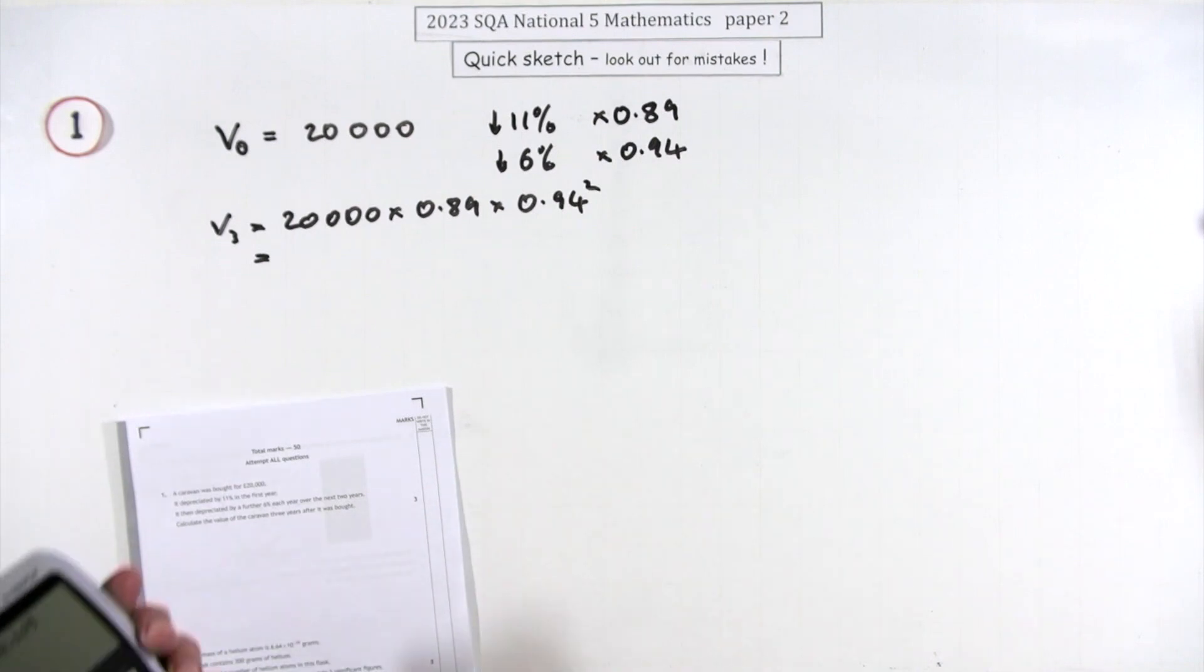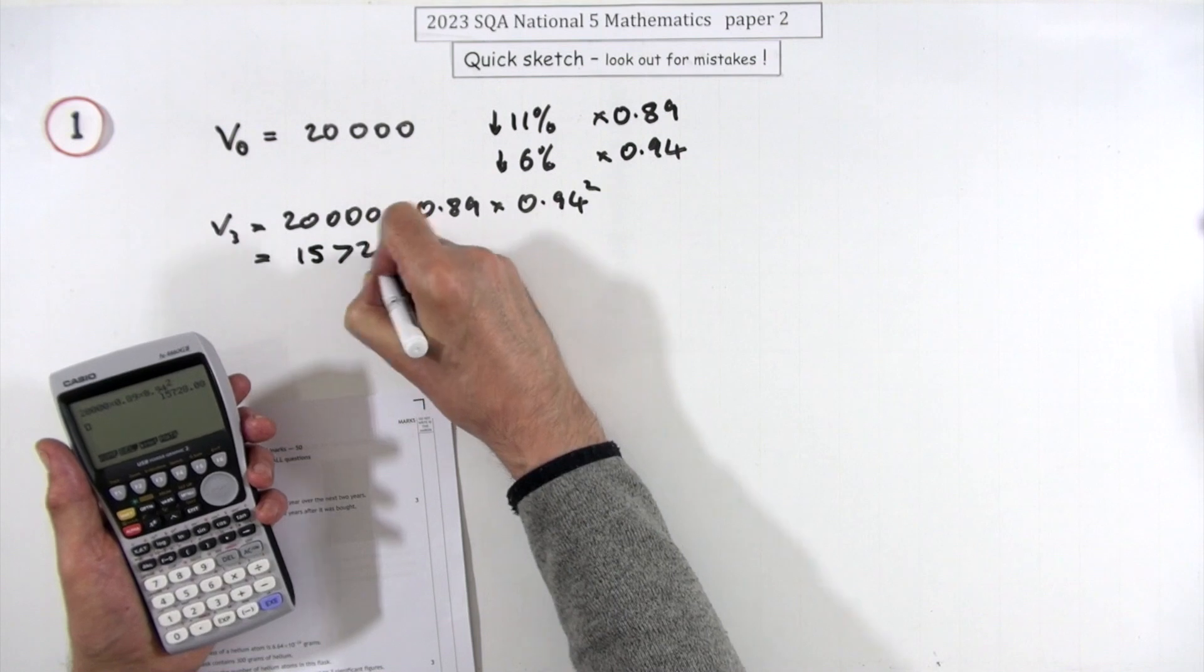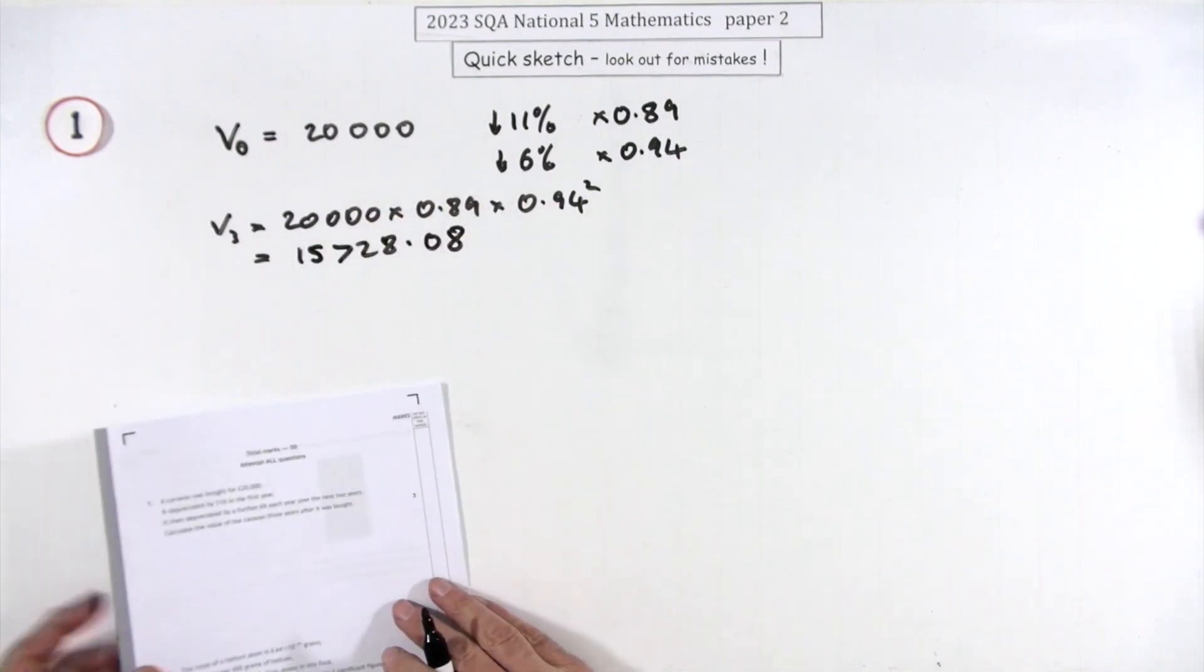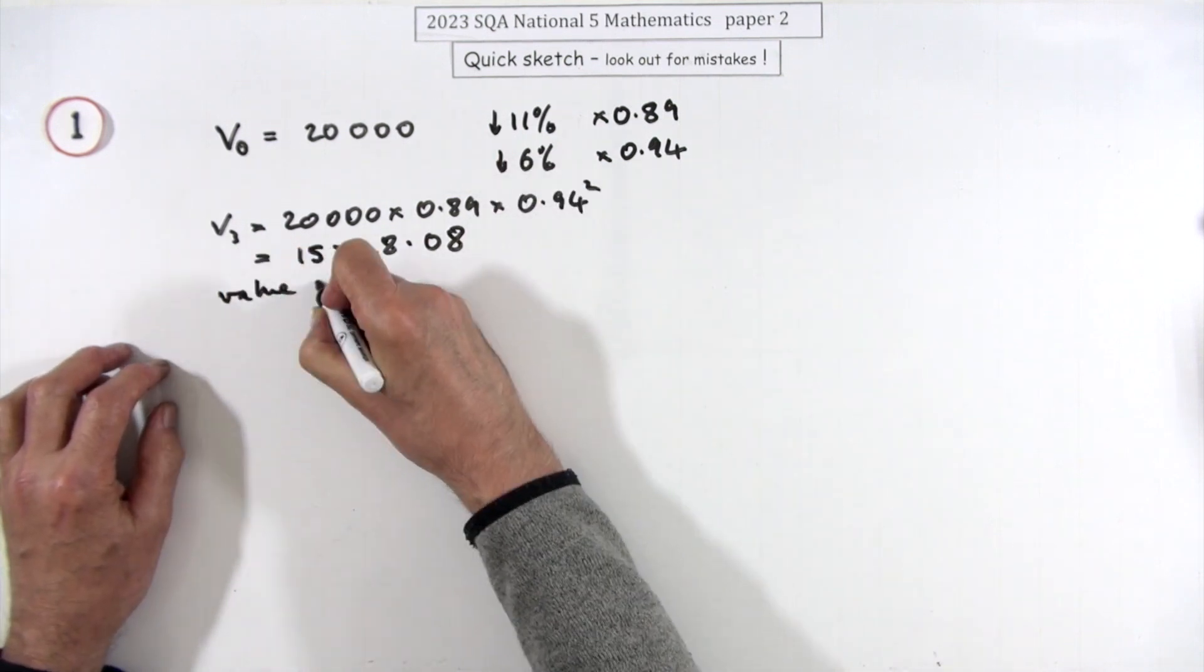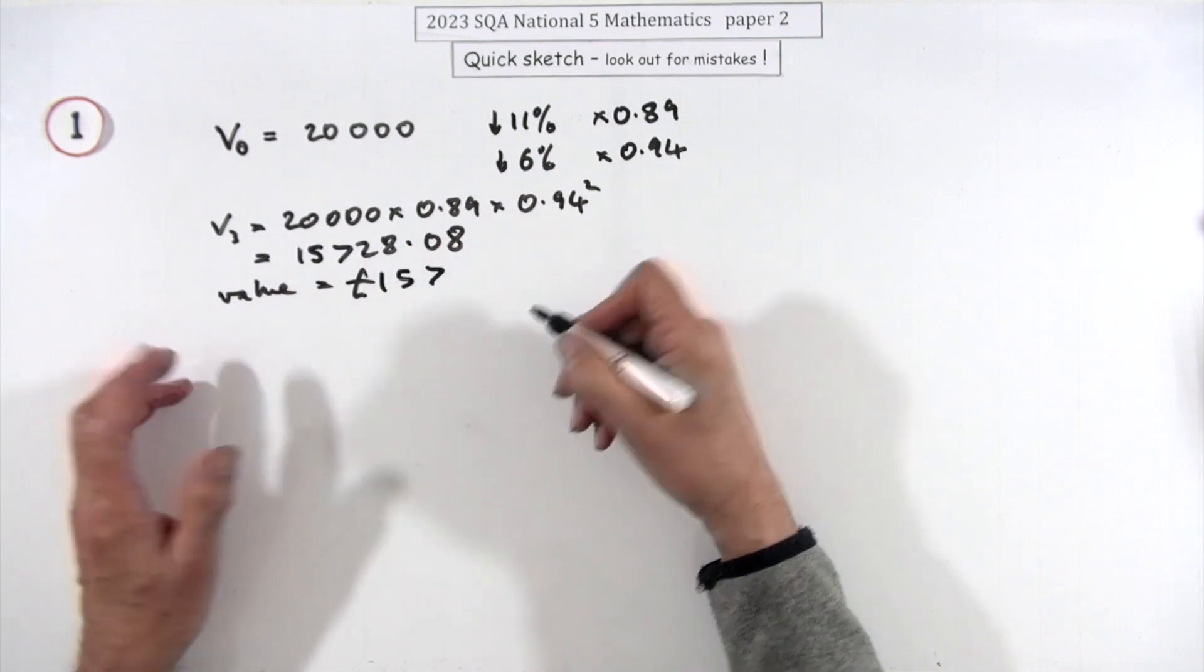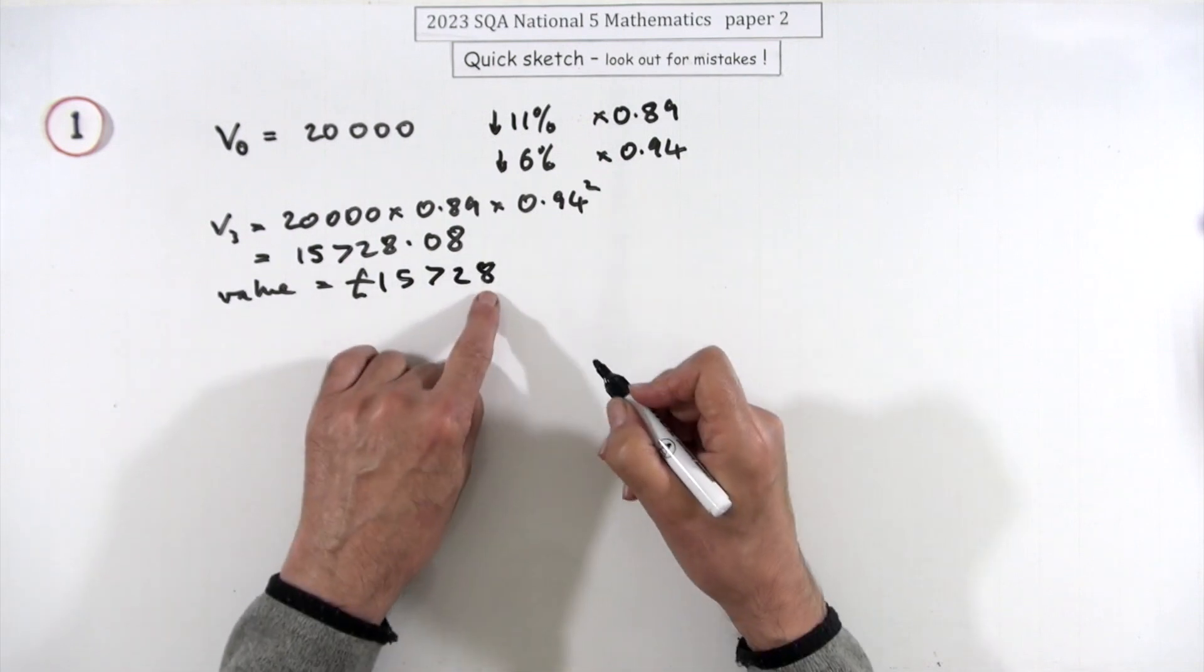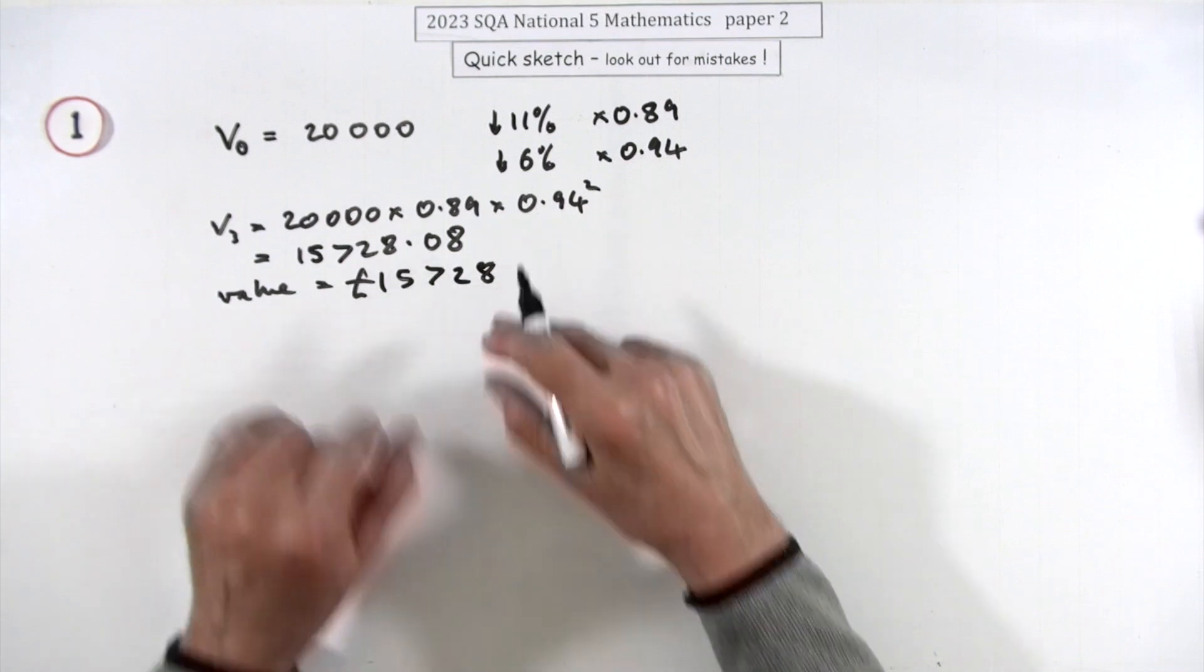Either times that again or squared, whichever you like. Then press the buttons and there's your three marks. That gives you £15,728.08. But then we say, what's its value going to be? It's in pounds, I'll put the pounds back in. So certainly 15,000, certainly 700, but you're not going to put in pence. Even putting it to the nearest pound seems a bit excessive for the value after three years, but I'll put that down anyway.